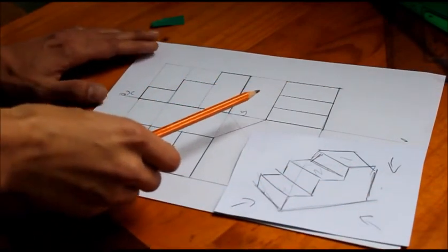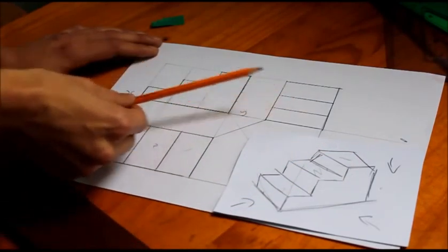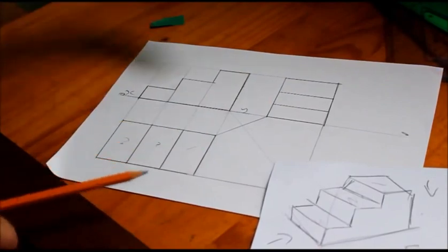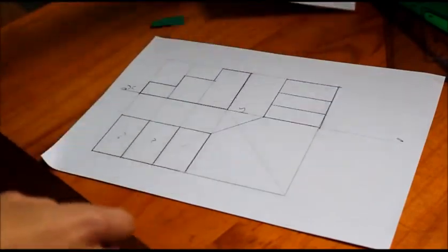It contains an end elevation which is looking in this direction of the set of stairs here. And it also contains a plan which is looking down on whatever the object is. So I'm going to show you quickly how to draw this.